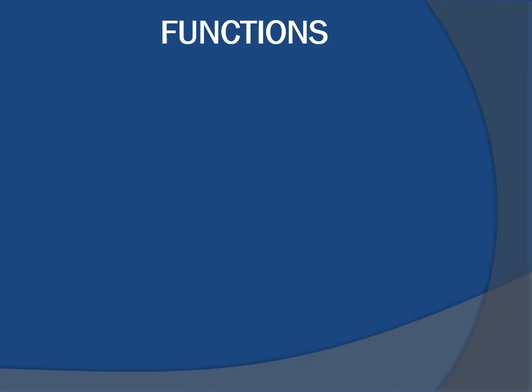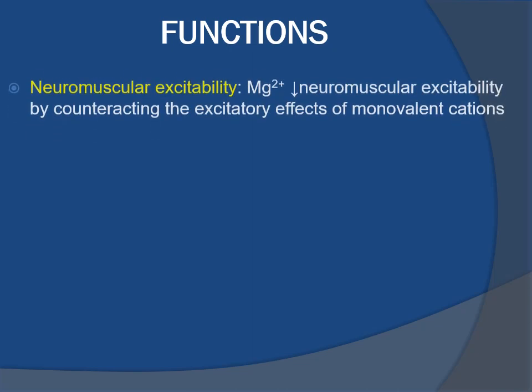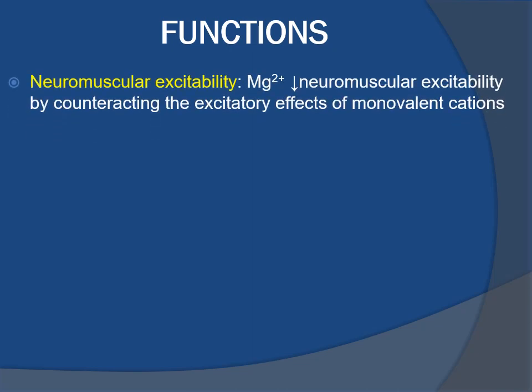Functions of magnesium: magnesium has a role in neuromuscular excitability — it decreases neuromuscular excitability by counteracting the excitatory effects of monovalent cations.